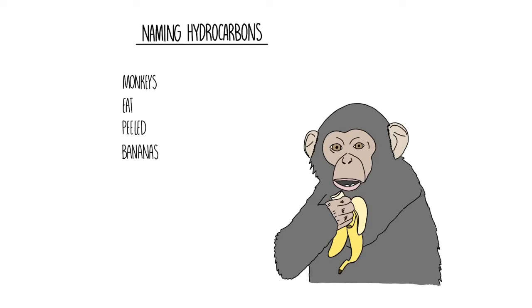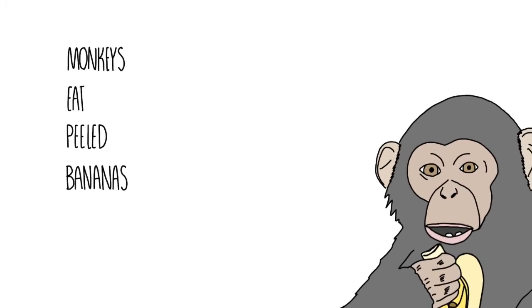You need to know how to name hydrocarbons. If you remember this phrase, monkeys eat peeled bananas, it makes it quite easy for you. Each of those first letters of each of those words corresponds to the first letter of the prefix of the hydrocarbon. M stands for meth, E stands for eth, peeled stands for prop, and bananas stands for but.